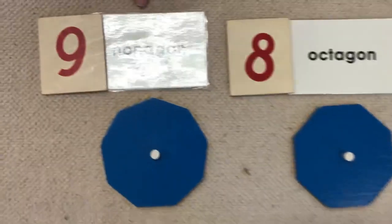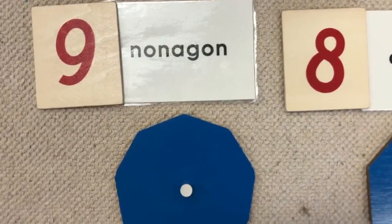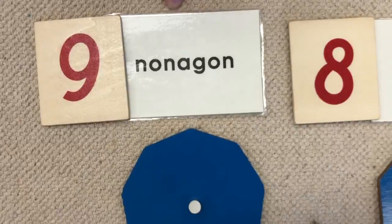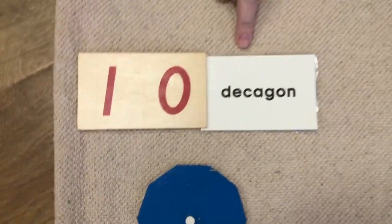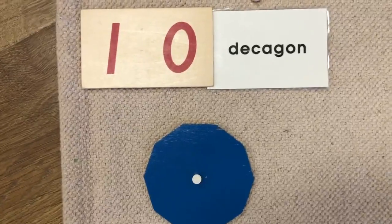A nine-sided polygon is called a nonagon. Nonagon. And a ten-sided polygon is called a decagon.